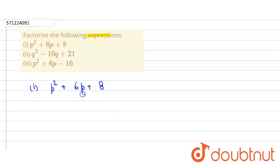Here we have to split this middle term 6 such that its sum is 6 and multiplication is 8. So it can be written as p² plus 4p plus 2p plus 8.